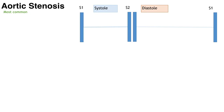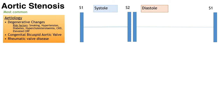Starting with aortic stenosis — the most common valvular disease in Europe and the USA and the second most frequent cause for cardiac surgery. Patients tend to be in their 70s and 80s because the most common cause is degenerative changes, accounting for 80%. Risk factors include smoking, hypertension, diabetes, high cholesterol, CKD and elevated CRP.